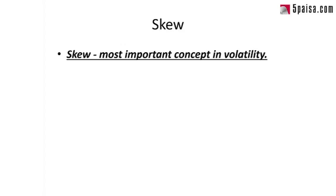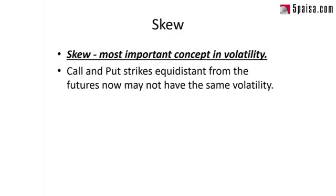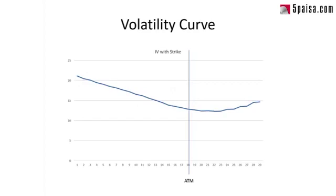It all starts with the understanding that not all strikes have equal IVs. In equities, the lower puts or lower strikes usually have higher IVs than ATMs and calls, while higher strikes — usually calls — have lower IVs. In this graph, we can see that IVs get lower till the ATM, drop a little bit more, and then slowly start to go up again.